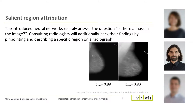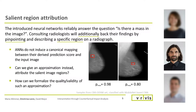Such neural networks can reliably answer the question: is there a mass in the image? However, contrary to consulting radiologists, they fail in pinpointing and describing their findings. Since the networks don't do it intrinsically, we approximate this relationship.